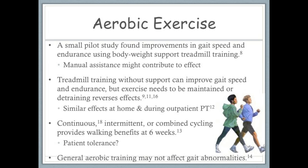Aerobic training is another type of exercise that research studies have evaluated to understand its impact on gait. Overall, aerobic training seems to improve gait speed and endurance, although the methods of promoting optimal improvements have still not been determined. Some studies suggest that body weight support treadmill training induces greater changes to gait, whereas treadmill training without support also seems to provide beneficial effects. Different forms of cycling increased walking endurance 6 weeks after treatment, with the best effects, although non-significant, in the continuous cycling group. Patient tolerance with higher intensity exercise may be an issue, so individualizing aerobic training to patient fatigue and tolerance will help you develop appropriate interventions. The task specificity of aerobic training when measuring gait impairments may contribute to the positive effects, because general aerobic circuit training might not significantly improve gait parameters.